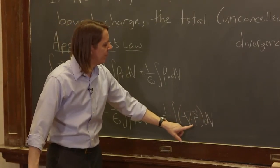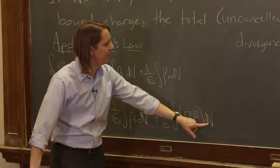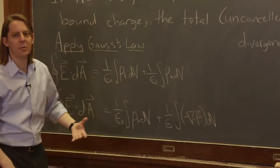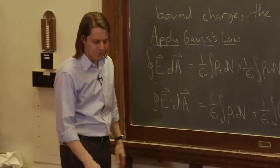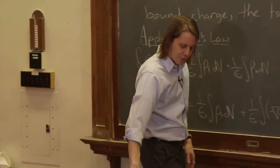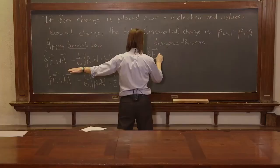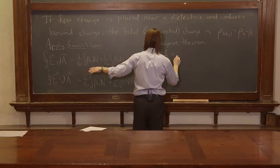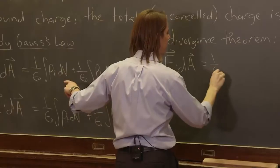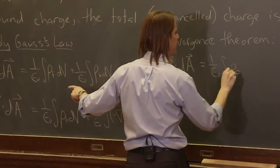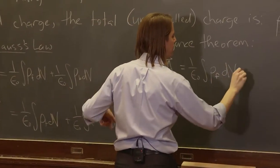This is the integral of a derivative over a region is related to the value at the boundaries. So instead of this integral of this divergence, which is a derivative in a volume, we're going to turn that into a surface integral of P. That's what the divergence theorem does. So we've still got this part the same, the integral around a surface of E dot dA. And we still have this part, one over epsilon naught, the integral of the free charge dV.